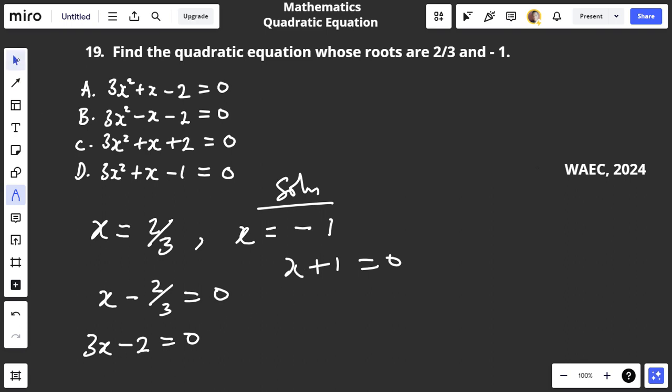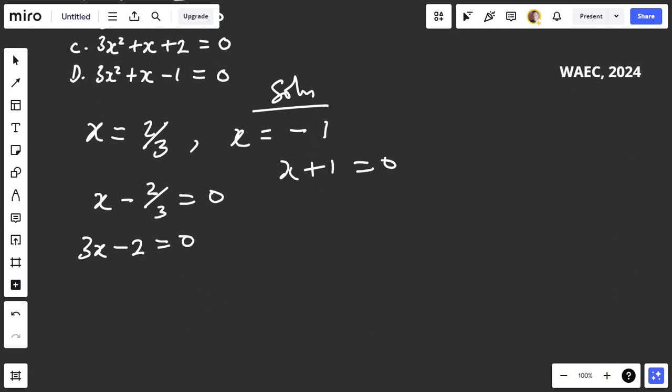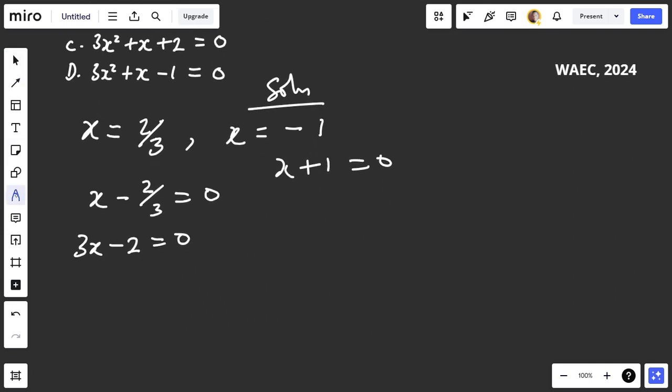So now we have our multiplication: (3x - 2) times (x + 1) = 0. This is like resolving from the bottom to the top.